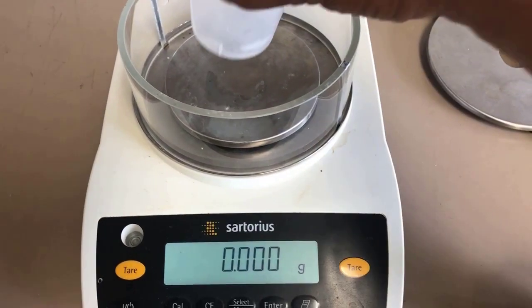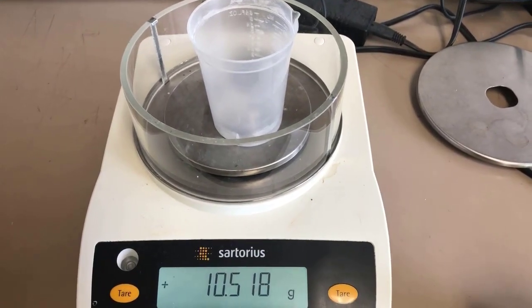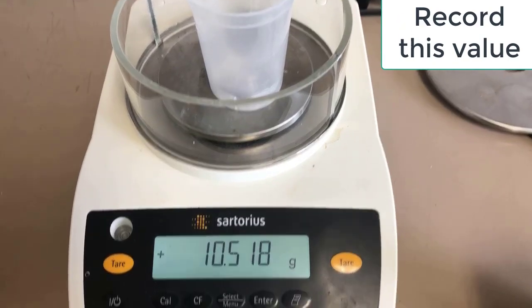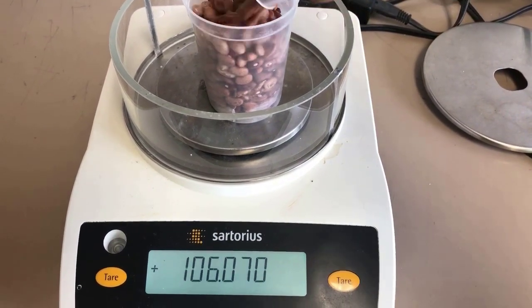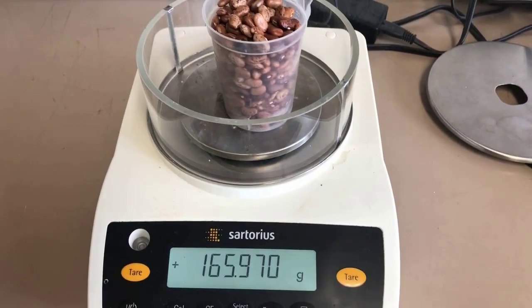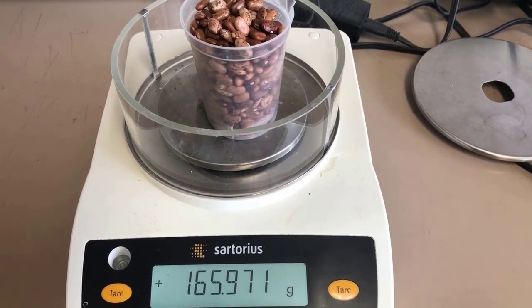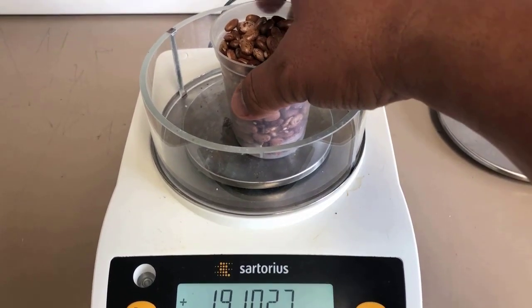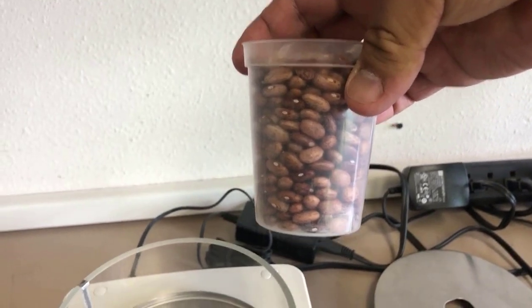We're going to see how close we are by calculating the approximate amount and then counting and comparing the results. So here we are at the balance. This will be the mass of the empty cup. And now I'll add the beans to it. And that's 165.971 grams with the beans in it.